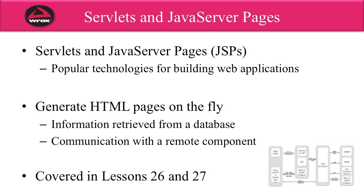Two of the most popular components in the Java Enterprise Edition are servlets and JSPs. They basically serve as the foundation for creating web applications. Effectively, a web application is a system that will generate HTML pages on the fly. You've already used web applications before — if you've gone online to an e-commerce site such as Amazon and ordered a book, you typed in the title or topic, and Amazon would give you a list of books that match. Then you can go through the process to purchase that book. All of those pages you view are actually generated on the fly based on your input and information retrieved from Amazon's database.